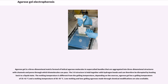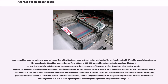Low melting and low gelling agarose made through chemical modifications are also available. Agarose gel has large pore size and good gel strength, making it suitable as an anticonvection medium for the electrophoresis of DNA and large protein molecules. The pore size of a 1% gel has been estimated from 100 nm to 200–500 nm, and its gel strength allows gels as dilute as 0.15% to form a slab for gel electrophoresis. Low concentration gels of 0.1 to 0.2% however are fragile and therefore hard to handle.